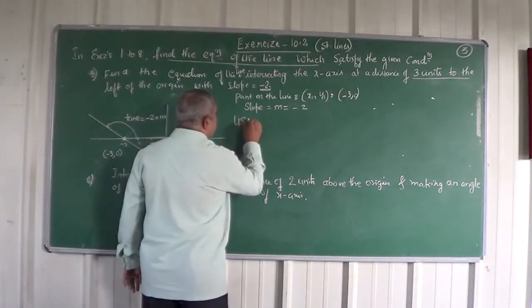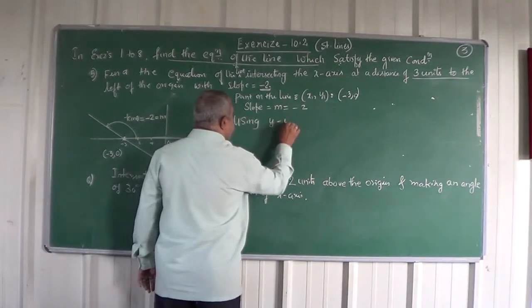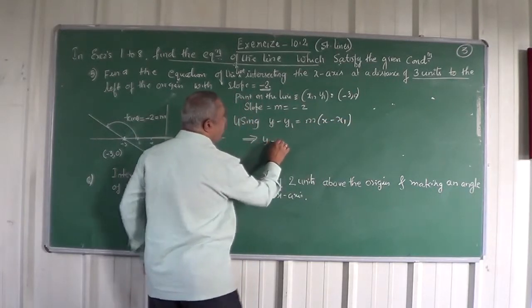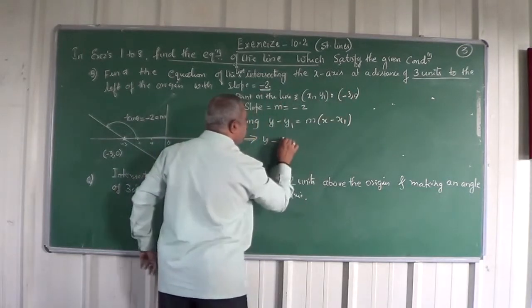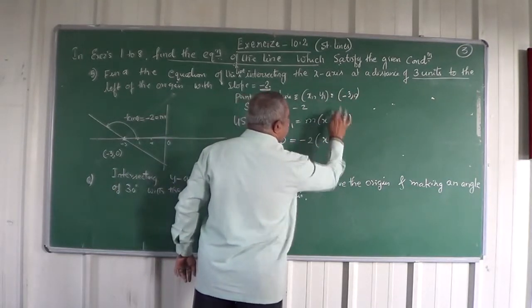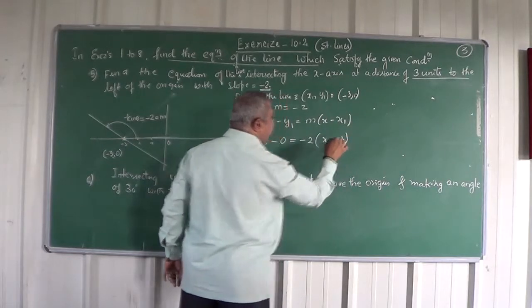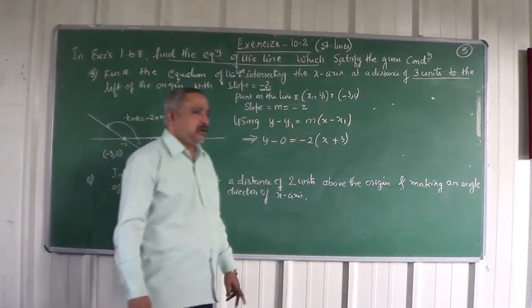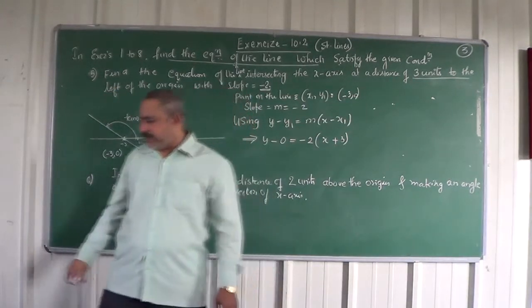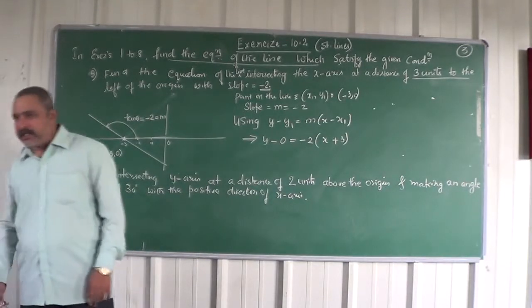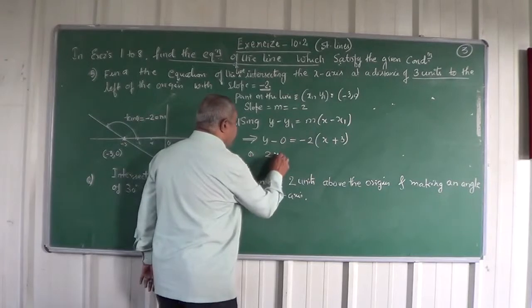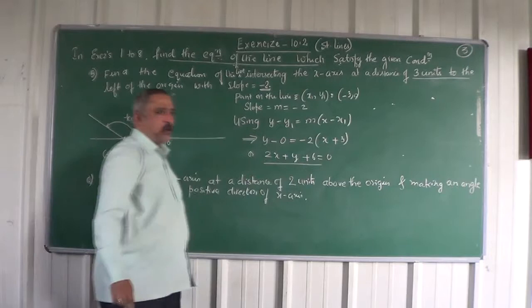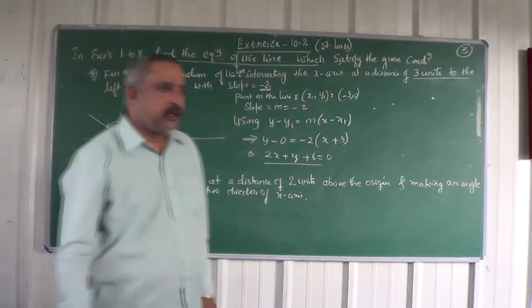Using y minus y1 equals m into x minus x1 and put the values. So y minus y1, what is the value of y1? 0 equals minus 2 into x minus minus 3 becomes x plus 3. Now you can simplify and give me the answer. 2x plus y plus 6 equals 0. That is the answer. Write the answer: 2x plus y plus 6 equals 0.